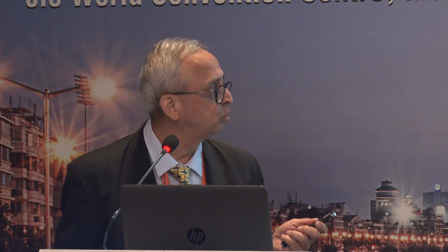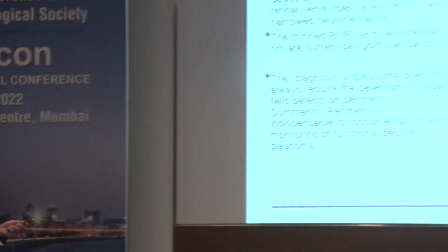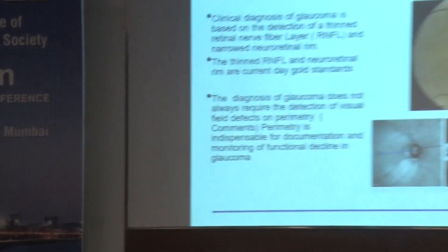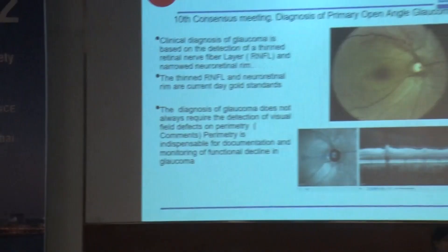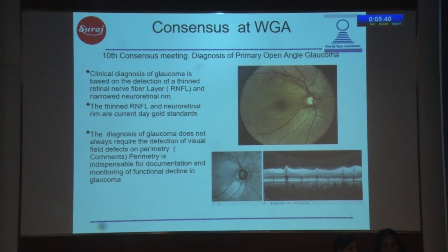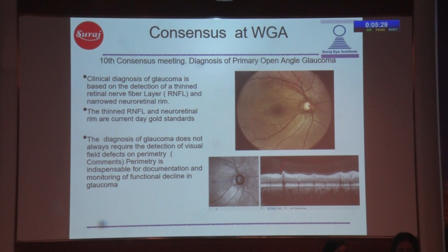I'm going to take you through a very short presentation on the preferred practice patterns. I thought the best thing to do was to visit the consensus, because there's a lot of effort that's gone into the consensus at the WGA. My contribution really is showing you how it applies practically to the photographs and the patients. The clinical diagnosis of glaucoma is based on the detection of a thin retinal nerve fiber layer and a narrowed neuroretinal rim, which are the current-day gold standards.